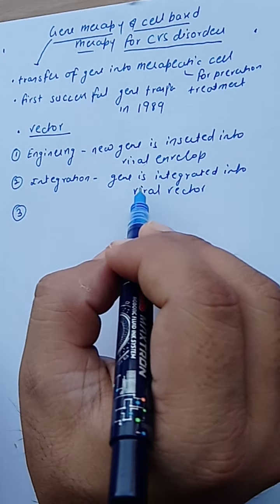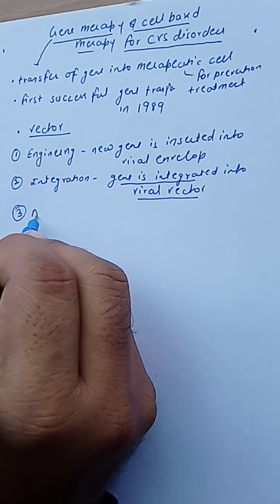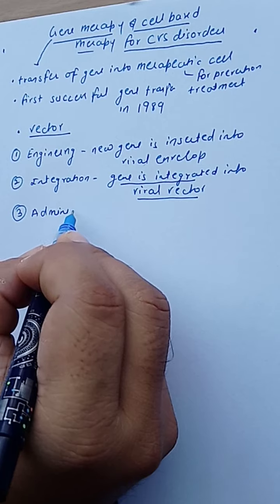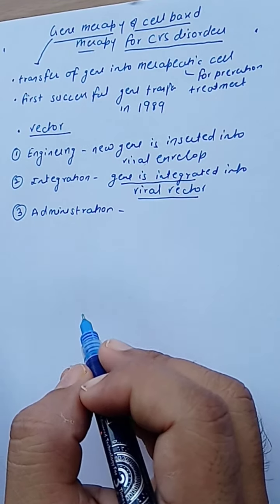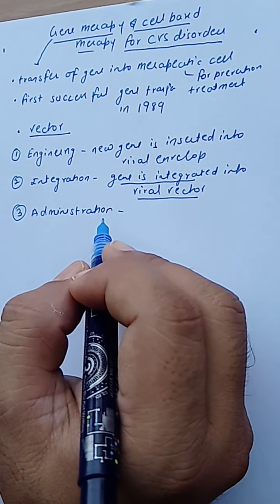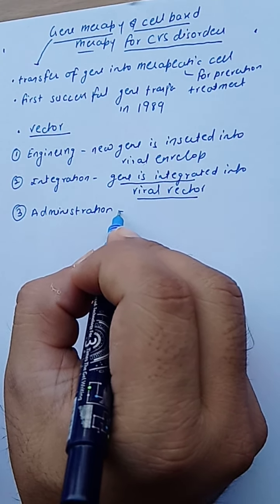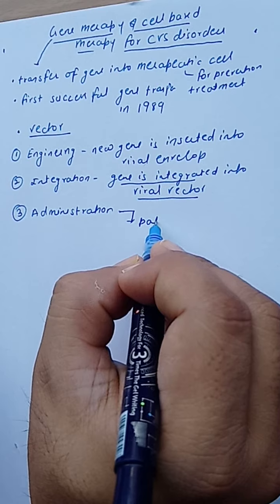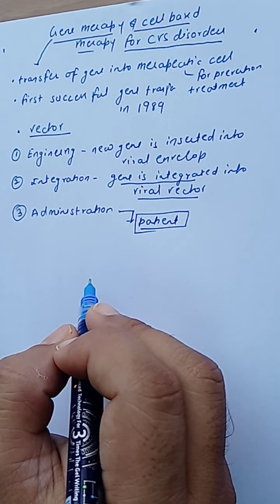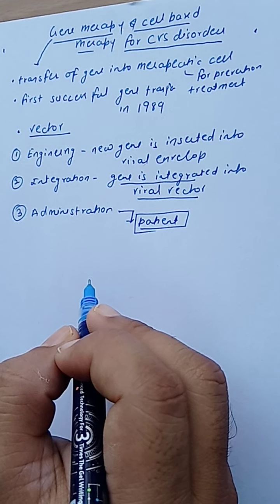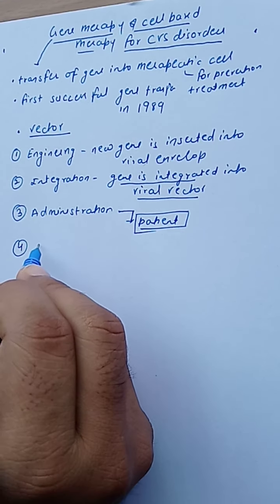The third step is administration. Once the gene is integrated with the viral vector, you administer this modified vector into the patient — through IV routes or IM injection depending upon your requirements.